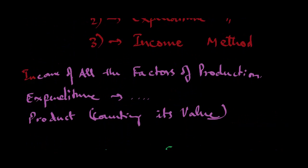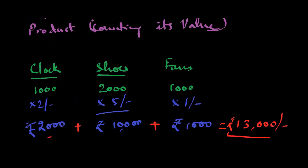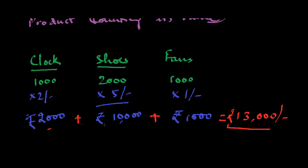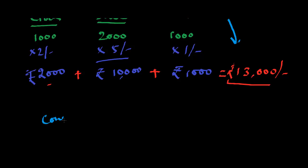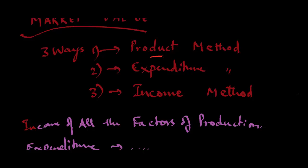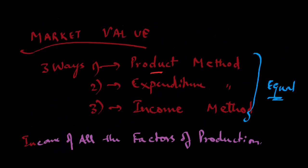By the product method, the value is 13,000 rupees. By the income method, the income of the people selling these items equals the same amount. And the value spent by the consumer is also the same. So in all three cases these methods give equal results, at least theoretically. We will discuss the criticisms of this market value approach in later videos.